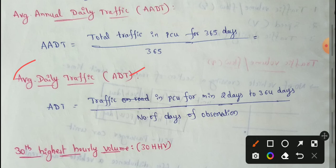That period could be 6 months — seasonal — or 1 month, or 1 week. The maximum period is 365 days, and the minimum is 2 days for average daily traffic.